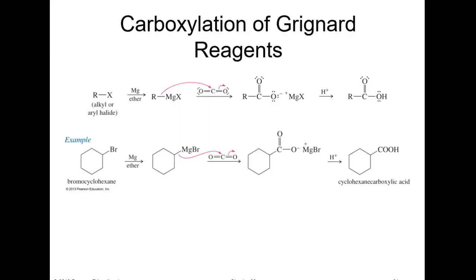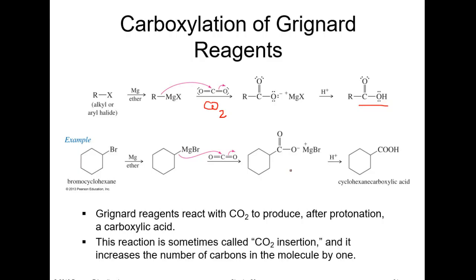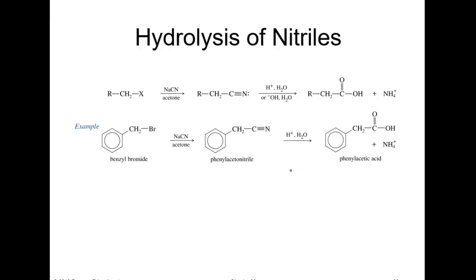This is something we did when we did the synthesis of ibuprofen. We made a Grignard and then added it to CO2, carbon dioxide, the dry ice. The Grignard attacks, gives you the magnesium carboxylate, and then you acidify it to form the carboxylic acid. This is a convenient way if you want to add a carbon onto your molecule and make a carboxylic acid. That is through a Grignard. Grignard reagents react with CO2 to produce, after protonation, a carboxylic acid. This reaction is sometimes called CO2 insertion and increases the number of carbons of the molecule by one.